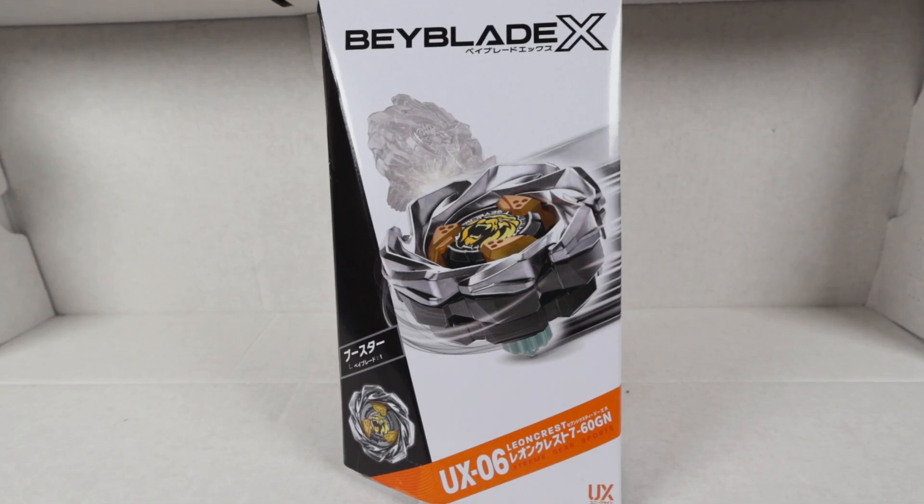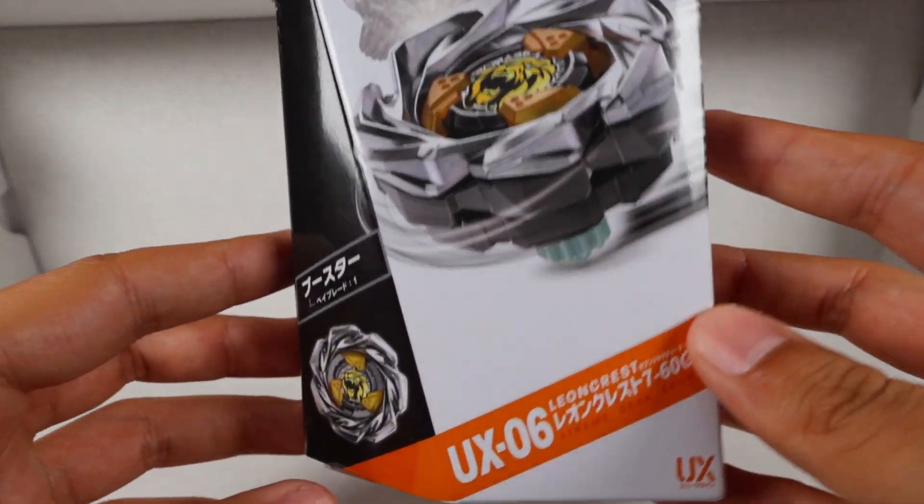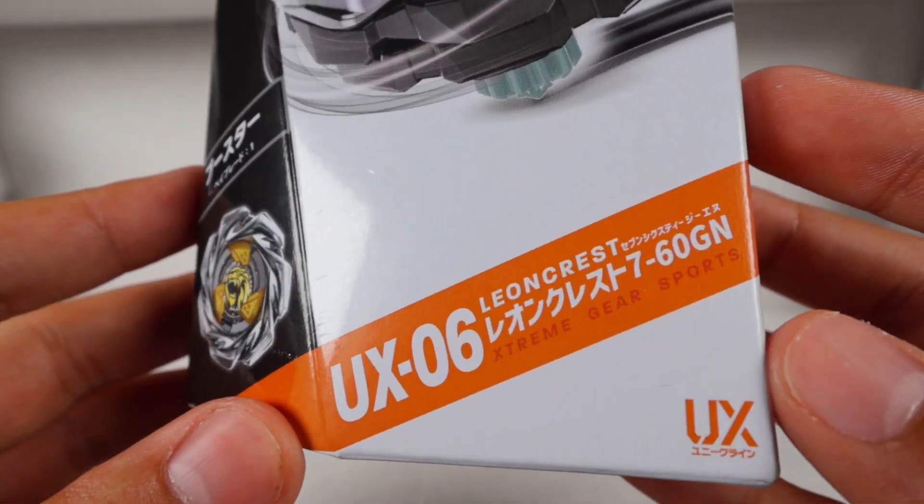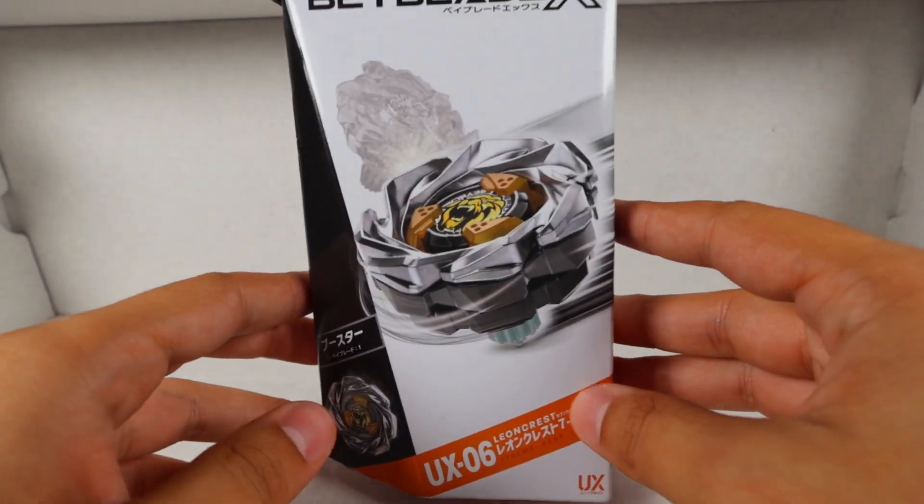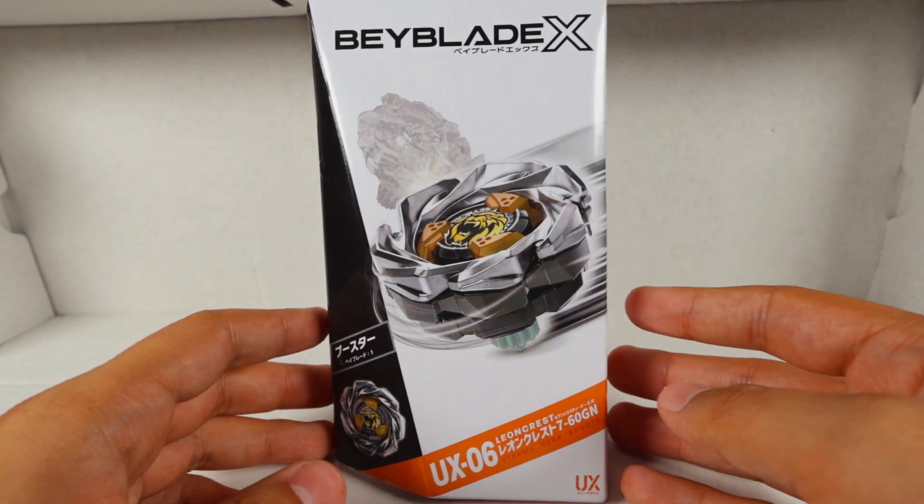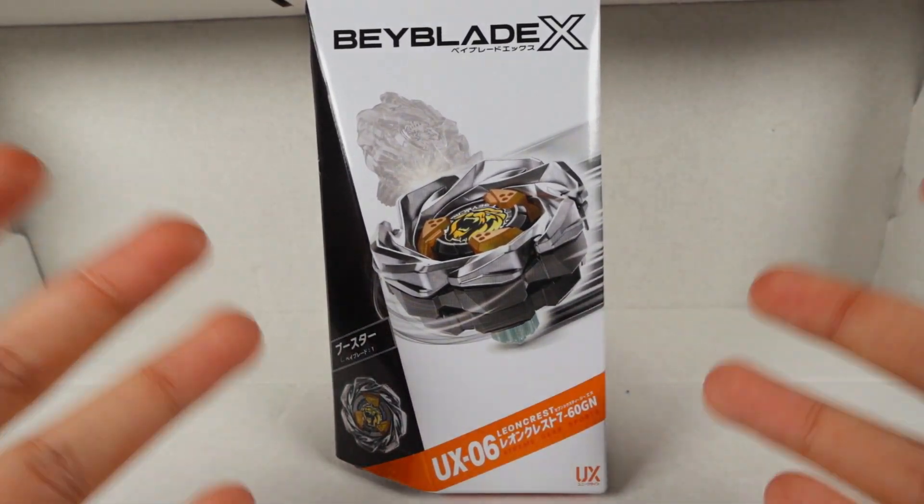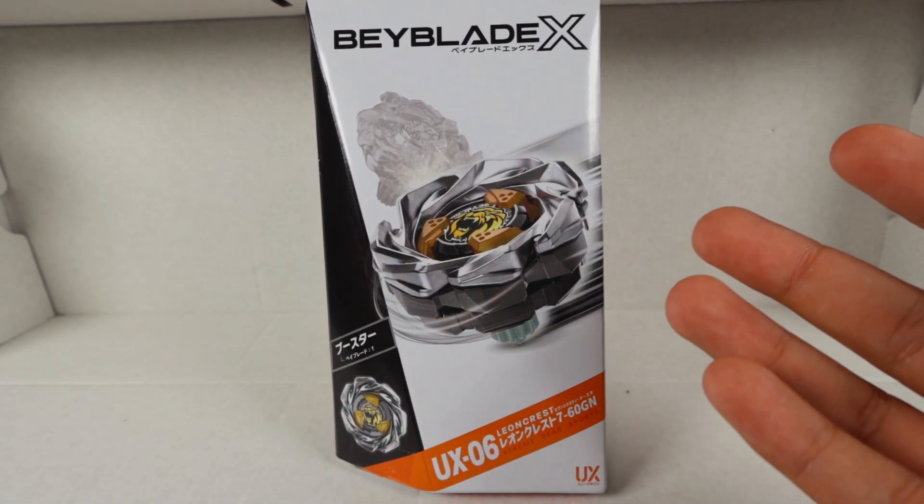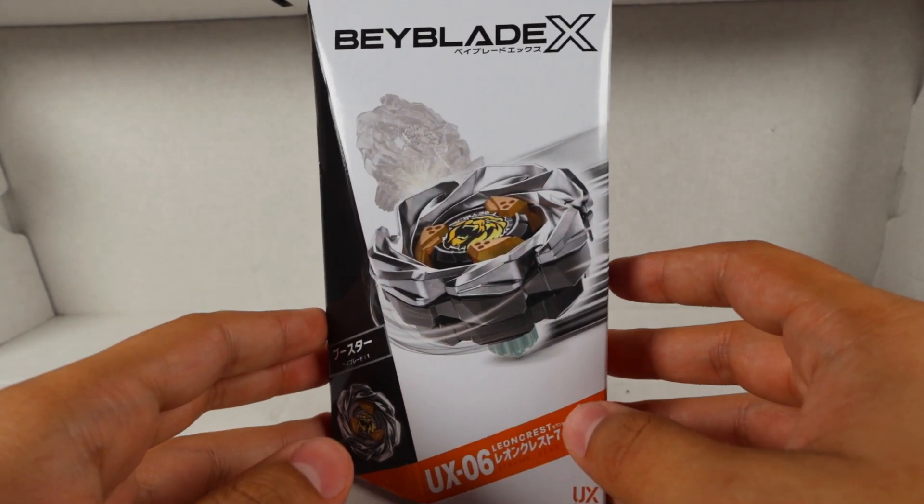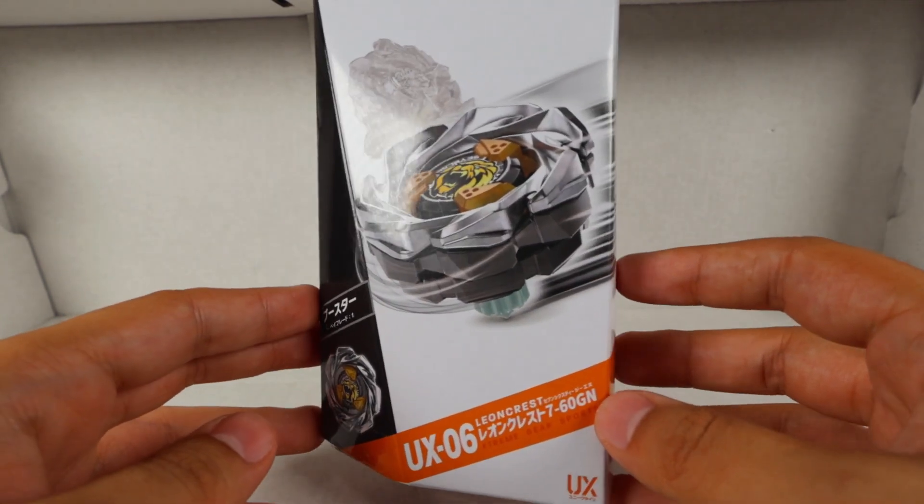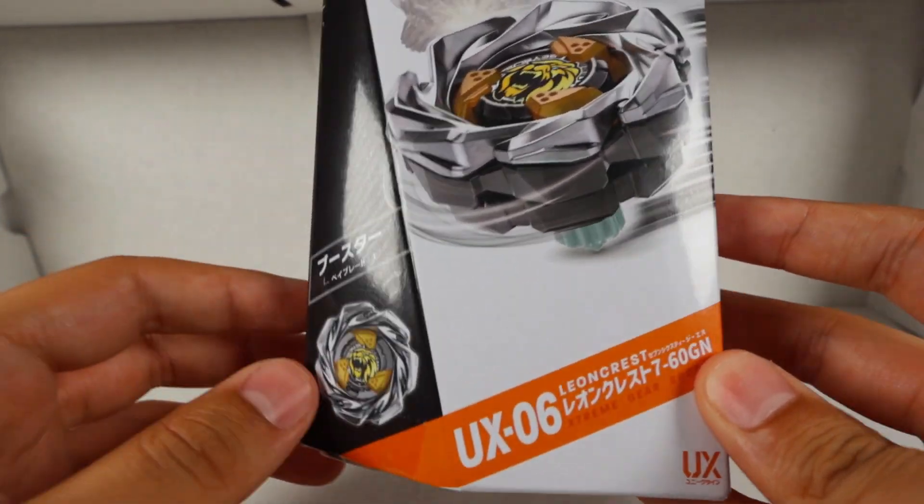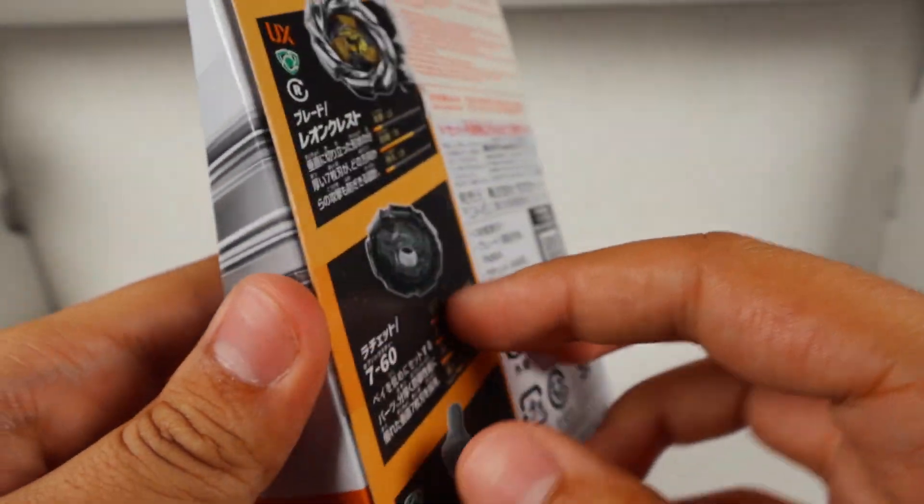Hello and welcome back to another Beyblade X unboxing. Today I finally got my hands on UX-06 Leon Crest, the brand new defense type, surprisingly. It took me quite a while to get my hands on both this and Phoenix Rudder packages, so sorry about the lack of uploads. I was just really waiting to get my hands onto this, and without further ado, let's take a look at the back of the box.